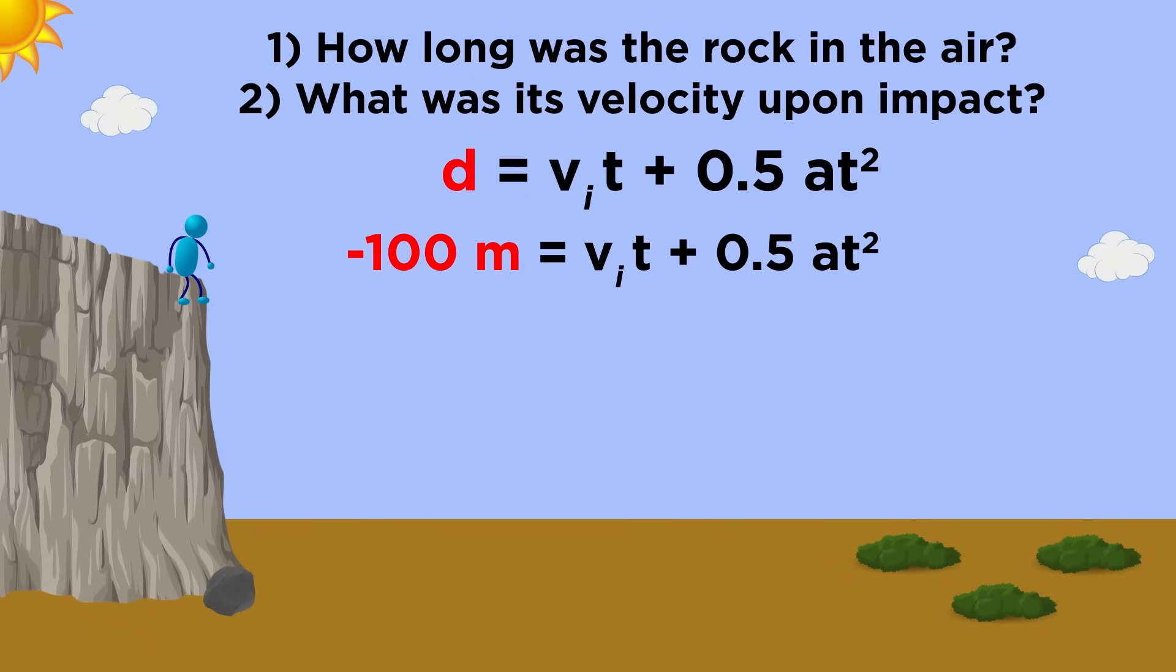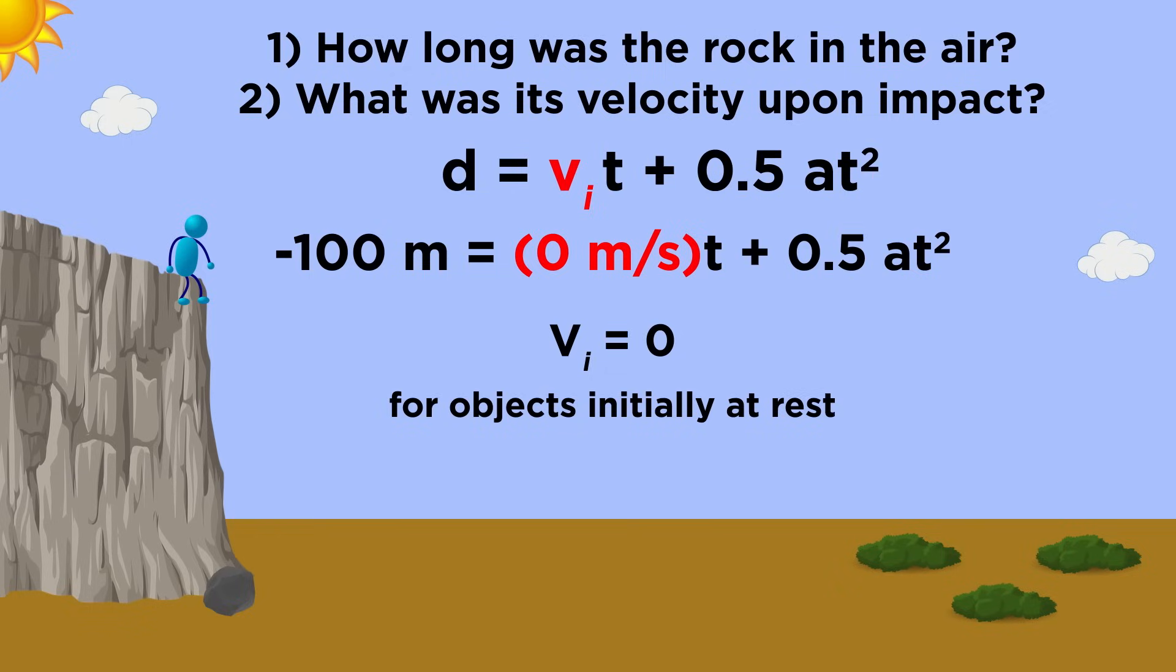We can plug in negative 100 here. For the initial velocity, that will be zero, because when you drop the rock, it is from a complete standstill. Only once you let go does gravity cause the rock to accelerate towards the ground. So this whole term can be ignored.